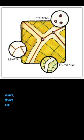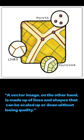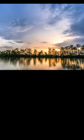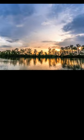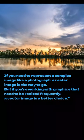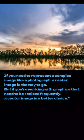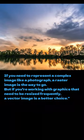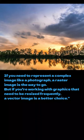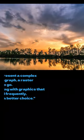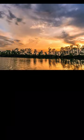However, they can become pixelated or blurry if they are enlarged too much. A vector image, on the other hand, is made up of lines and shapes that can be scaled up or down without losing quality. If you need to represent a complex image like a photograph, a raster image is the way to go. But if you're working with graphics that need to be resized frequently, a vector image is a better choice.